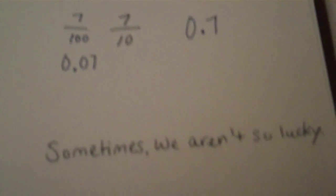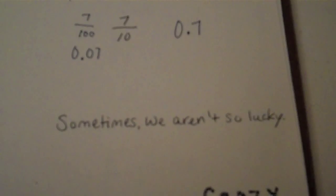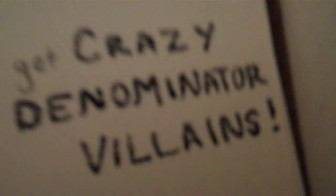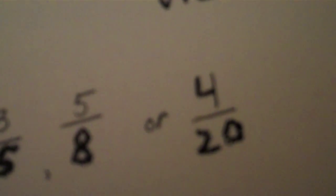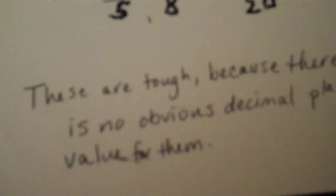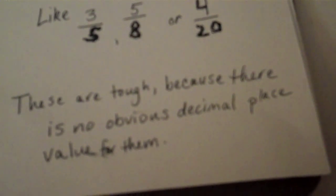But sometimes, we aren't so lucky. Sometimes, we get crazy denominator villains! Whoa! Like three fifths, five eighths, or four twentieths. These are tough because there's no obvious decimal place value for them. There's no eighths place value when I'm writing decimal numbers.